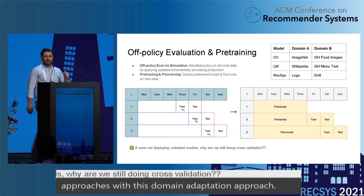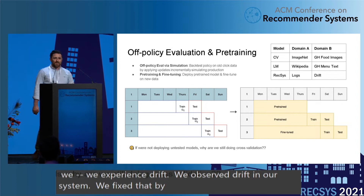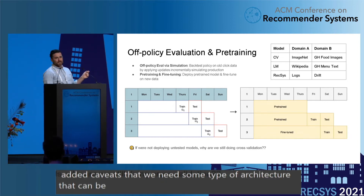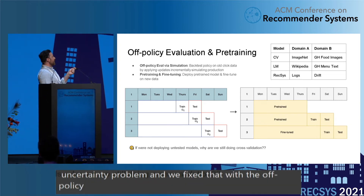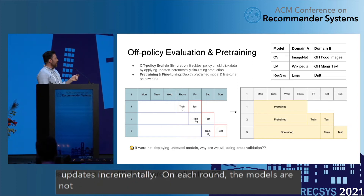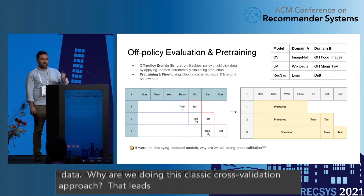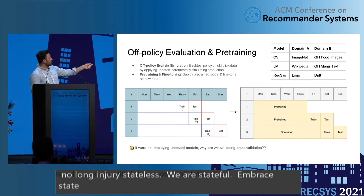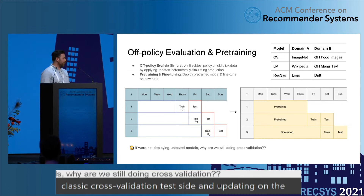To summarize: we observed drift in our system. We fixed it with the stateless retraining technique. We noticed it's very expensive, so we fixed that with incremental training, noting we need an architecture that can be updated incrementally. We also identified an uncertainty problem and fixed that with off-policy evaluation and the pre-training and fine-tuning technique. There's another caveat: we're doing incremental updates and these models are no longer new — they've already been tested and seen data. Why are we still doing classic cross-validation? This leads to a discussion about progressive validation. We're no longer deploying untested models; we're stateful. Let's embrace state and update progressively — getting rid of the classic cross-validation test set and updating on the newest partition.